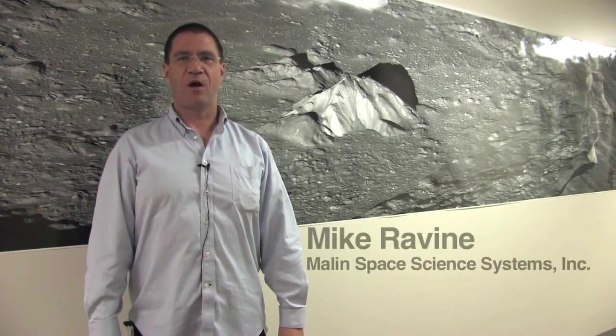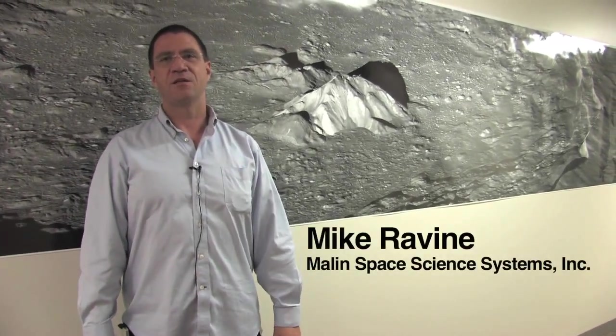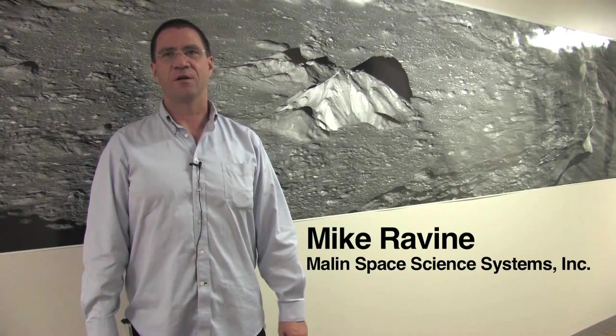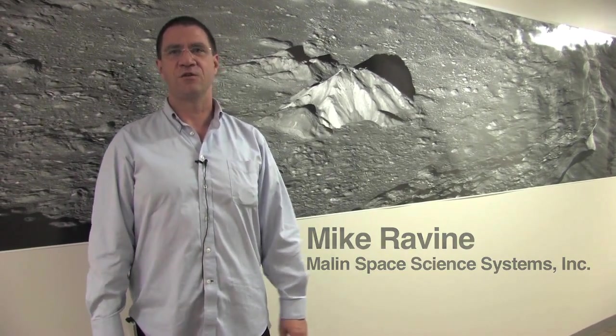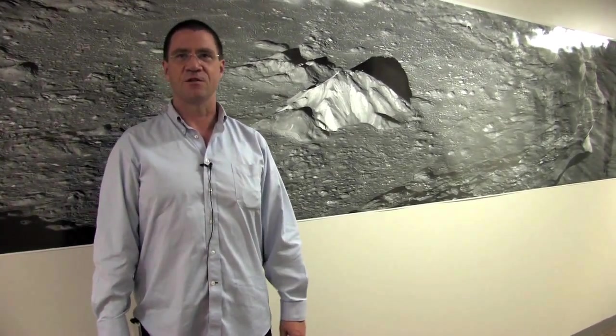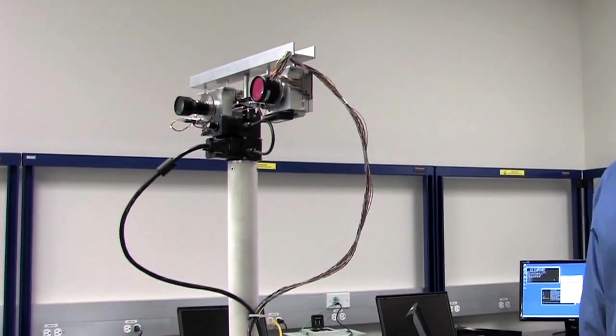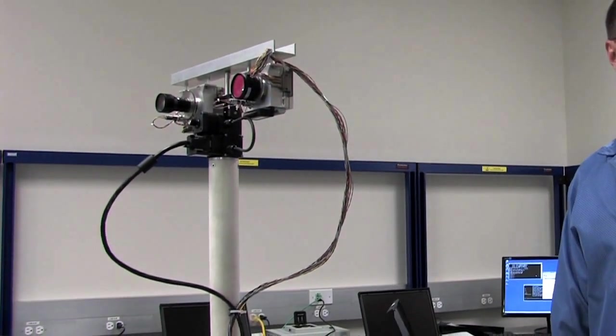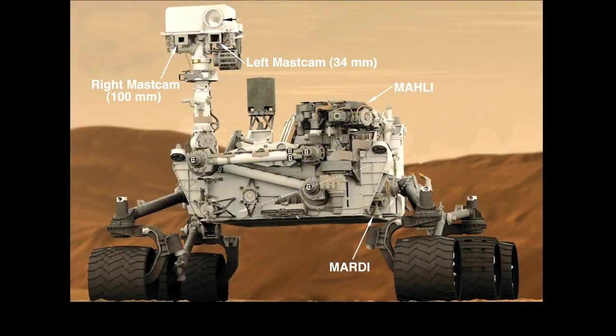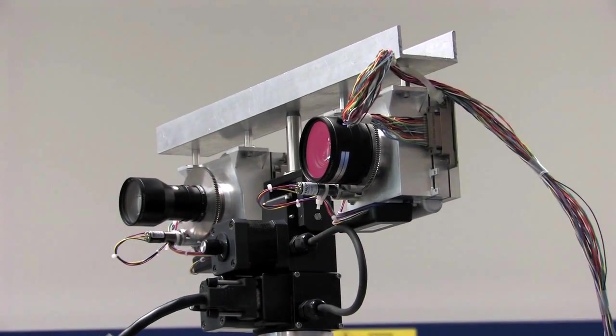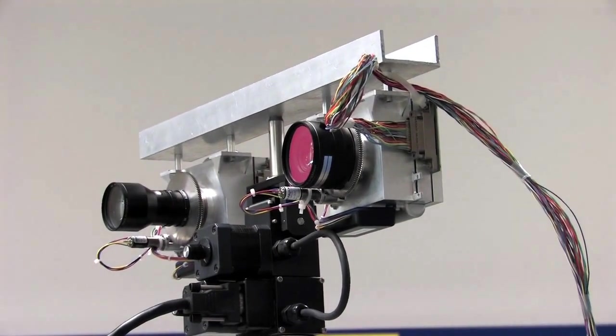I'm Mike Ravine. I'm the Advanced Projects Manager here at Malin Space Science Systems in San Diego, California. And I'm going to take you on a tour of our facility and show you how we build cameras for space missions. This thing here is an engineering model copy of our two cameras on the mast on MSL, which go by the name Mastcam. We needed something that would function the same way. And so these are the two cameras. This is a pan-tilt mechanism we did in-house.